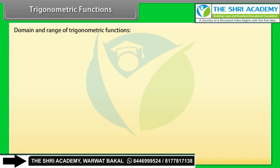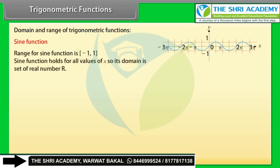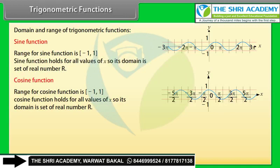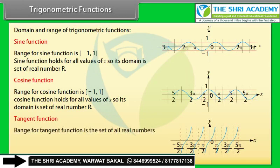As studied earlier, angle can be considered as a real number, so we denote the angle by x instead of θ. Sine function: range is [−1, 1] and domain is the set of all real numbers ℝ. Cosine function: range is [−1, 1] and domain is ℝ. Tangent function: range is the set of all real numbers; domain is {x ∈ ℝ : x ≠ (2n+1)π/2, where n is any integer}.